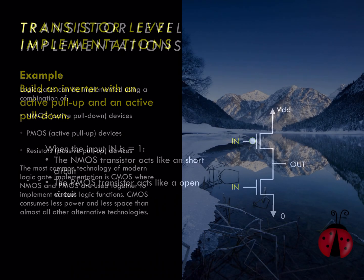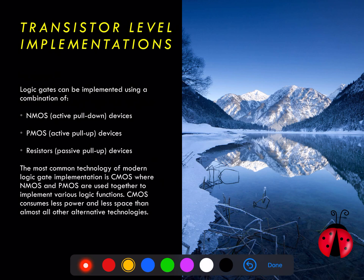We've looked at two basic ways of implementing the digital logic inverter using active pull-down and either a passive pull-up resistor or an active pull-up PMOS transistor. The most common technology in modern logic gate implementation is by far CMOS, where NMOS and PMOS transistors are combined in active pull-down and active pull-up mode to implement various logic functions and take advantage of huge power savings gained by drawing no current when inputs are at steady state. Overall, CMOS consumes less power and less space than almost all other alternative technologies and remains extremely attractive for integrated circuit and digital logic implementations.